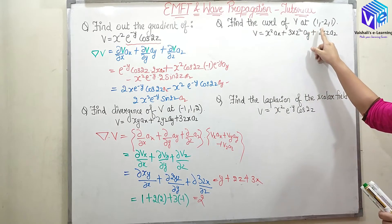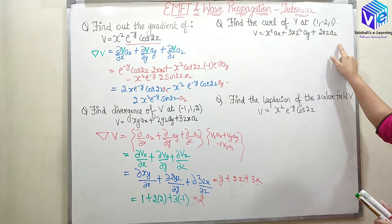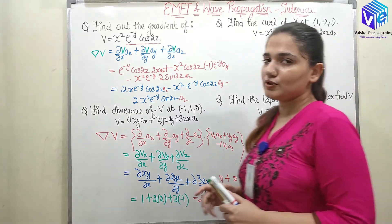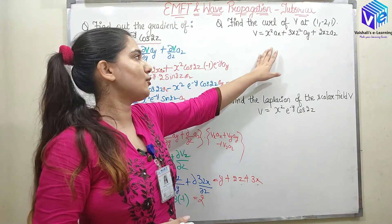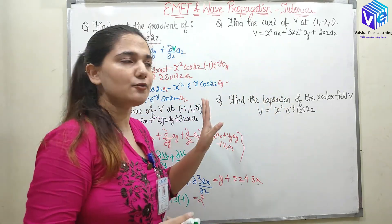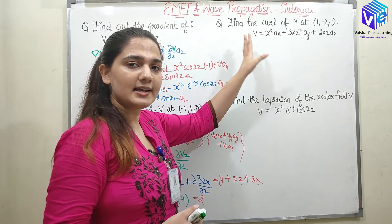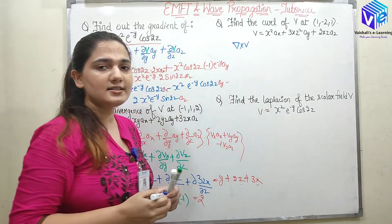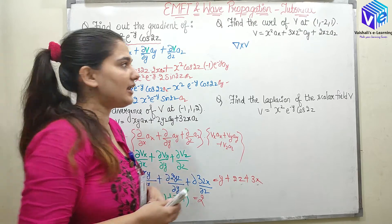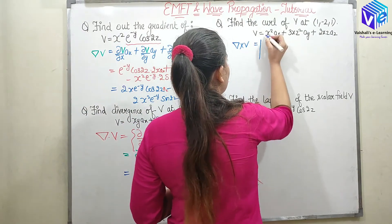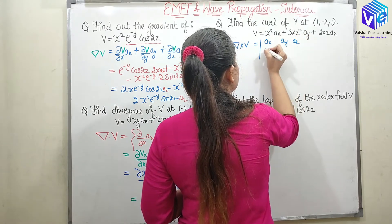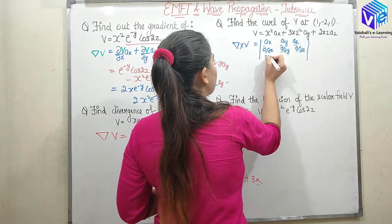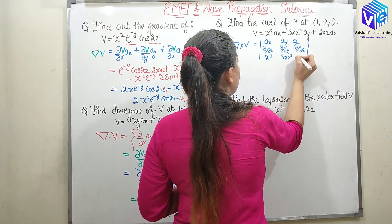Now find the curl of V at point (1, -2, 1), where V = x² ax + 3xz² ay + 2xz az. We can find the curl only when we have a vector. The curl, del cross V, is the third application of the del operator. Setting up the determinant: the first row is ax, ay, az; the second row is ∂/∂x, ∂/∂y, ∂/∂z; and the third row is x², 3xz², 2xz.